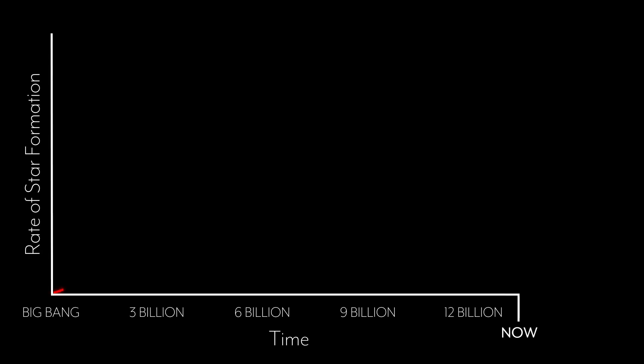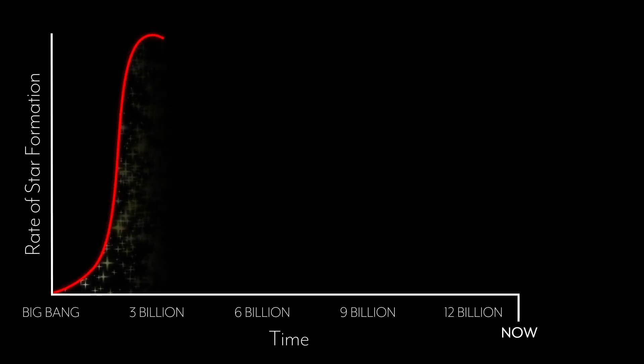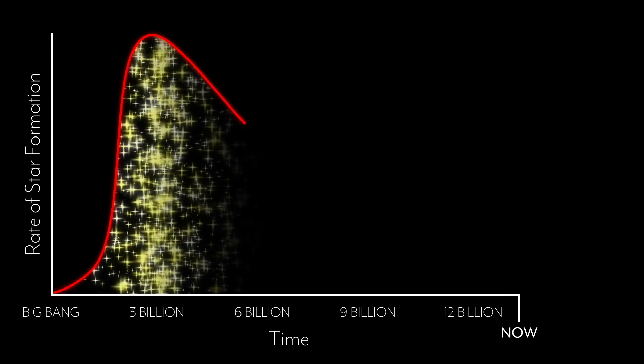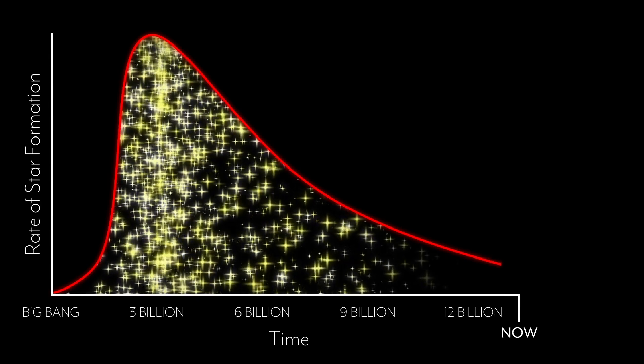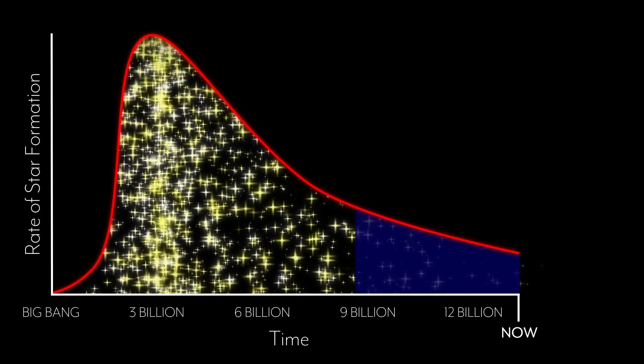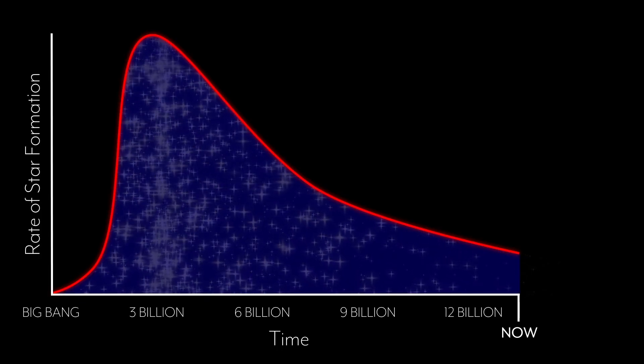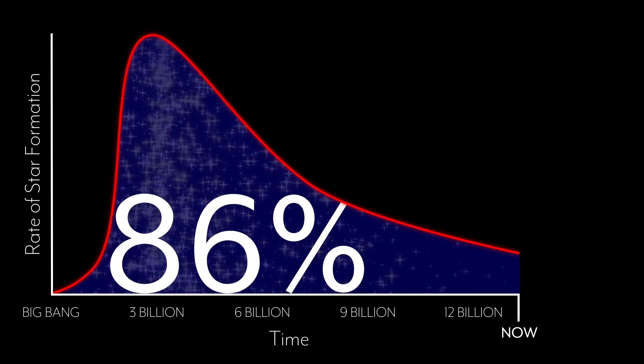Nine billion years ago was the peak of star formation in the universe when there were more and more stars being born all the time. And since that time it's been slowing down. You can actually calculate that the stars existing in the universe right now or the stars that have already previously existed account for 90 percent of the stars that ever have been or ever will be.